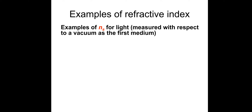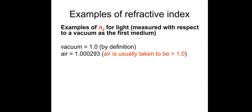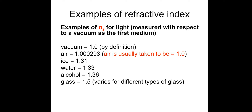Some examples of refractive index — normally measured with respect to a vacuum as the first medium, so vacuum is 1 by definition. Air is 1.00293, which we take to be 1.0 — and that air value is the only one you need to remember. Ice is 1.31, water 1.33, alcohol 1.36, glass approximately 1.5 as we just discussed, and something like diamond is 2.4.